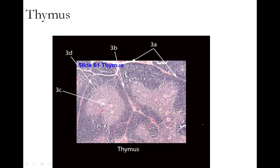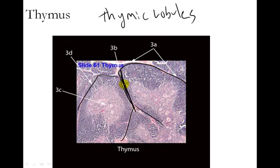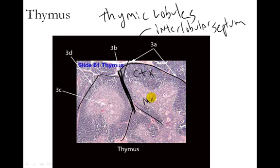The thymus has some immune function and is a very lobed gland found above the heart. It's mostly degenerated in adults but very large in embryos and fetuses. The thymus is set up in thymic lobules, and each lobule is divided from one another by what's called an interlobular septum. Each lobule has a cortex and a medulla. Those are important things for recognizing the thymus.